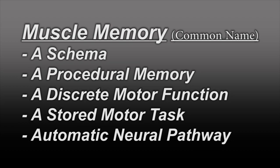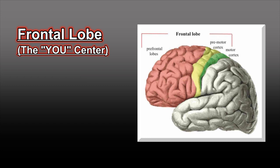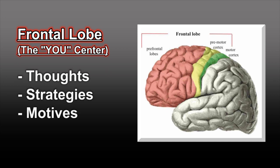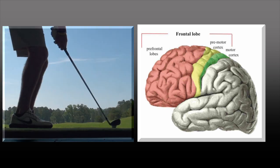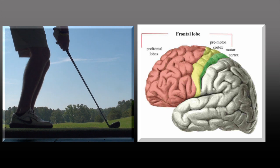The initiation of an automatic neural pathway starts in the frontal lobe, which is the part of the brain that makes you, you. This is the area that contains your thoughts, strategies, motives, and decision-making center. This is where you decide on a physical task.